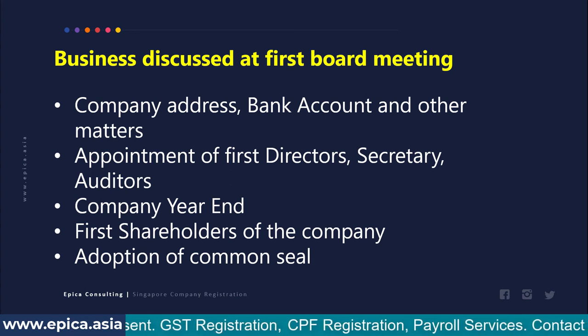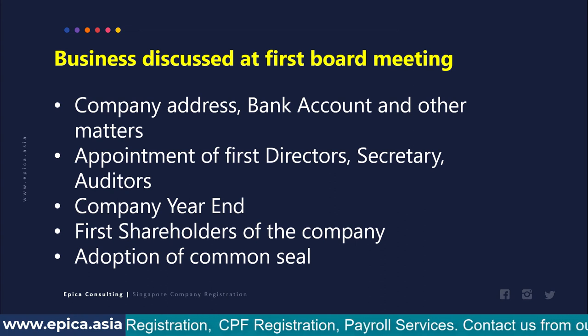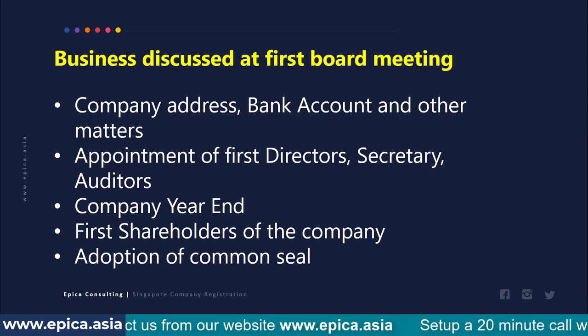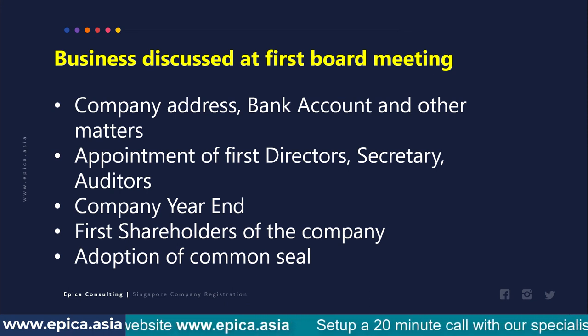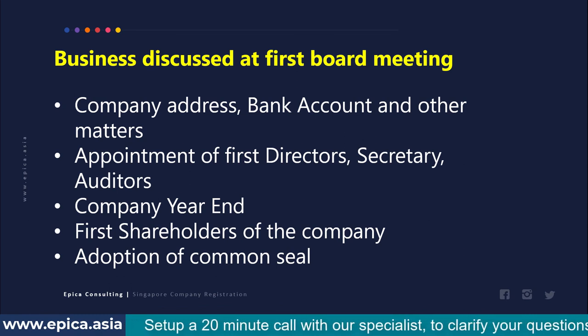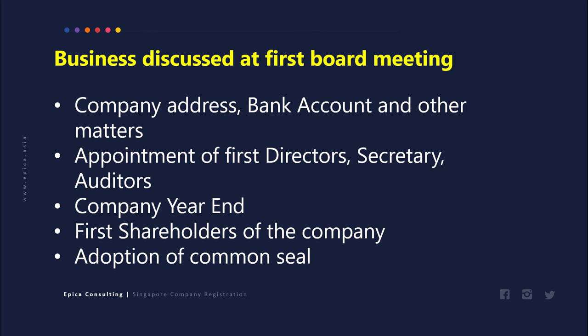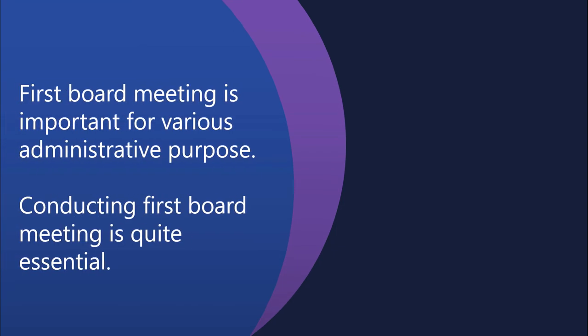When the first board meeting resolution is passed, many matters are clarified: who are the first directors of the company and who can take decisions, where the company will be located, with which bank the company will open its bank account, what will be the financial year of the company, who are the first shareholders and are they approved, and if a common seal needs to be adopted. In summary, the first board meeting is an important part for various administrative purposes, and conducting it and documenting its resolution is quite essential.